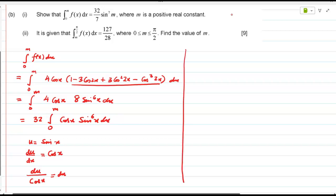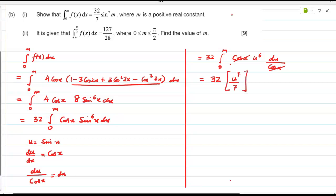So that's 32 integral 0 to m cos x u raised to 6 du over cos x. So this cancels, so that's what, 32 u raised to 7 over 7, m to 0, correct?